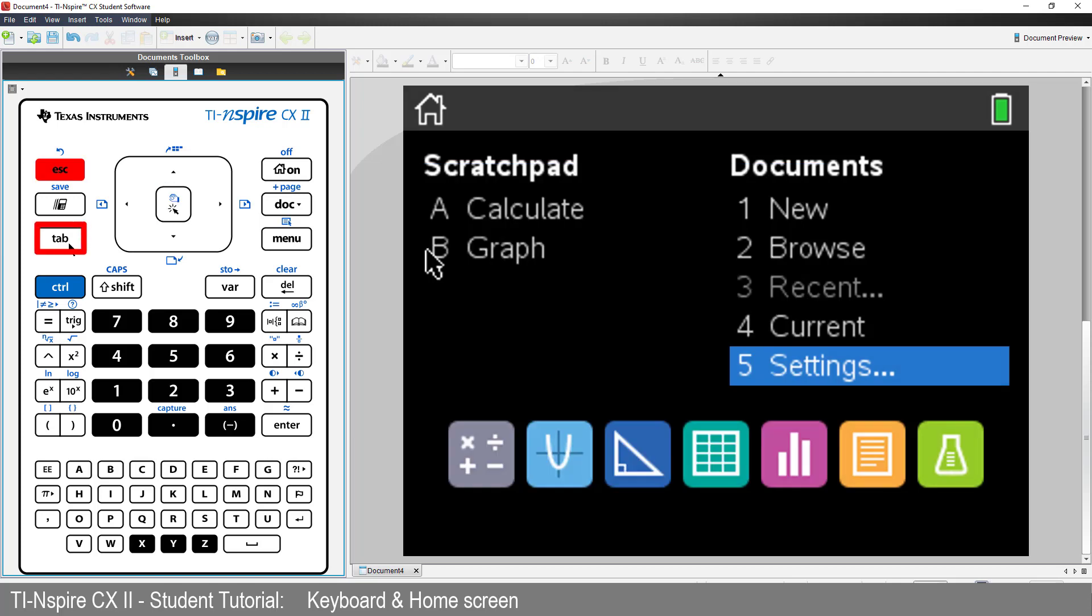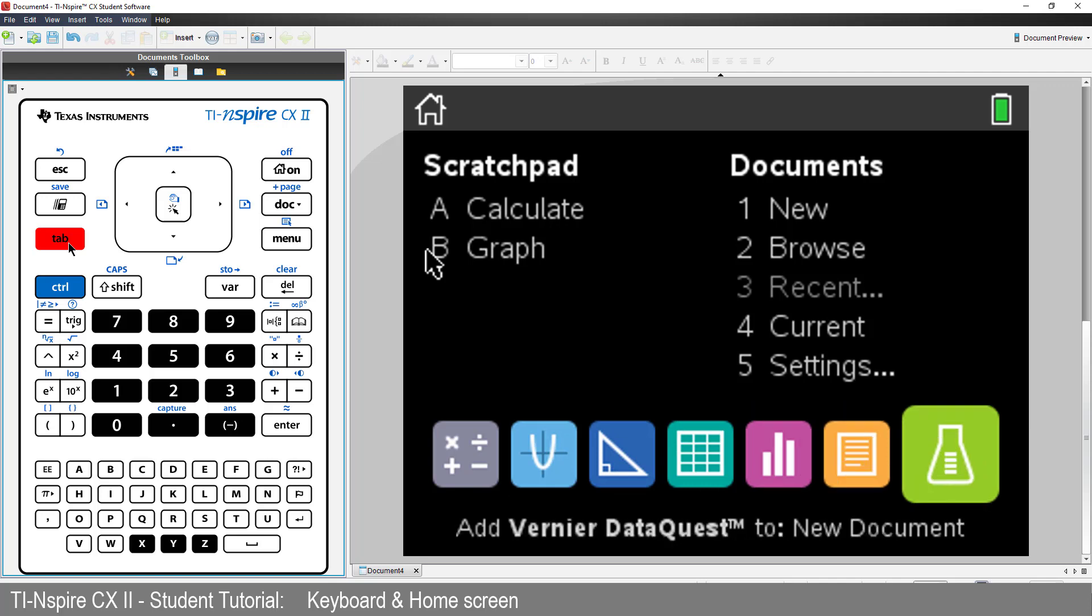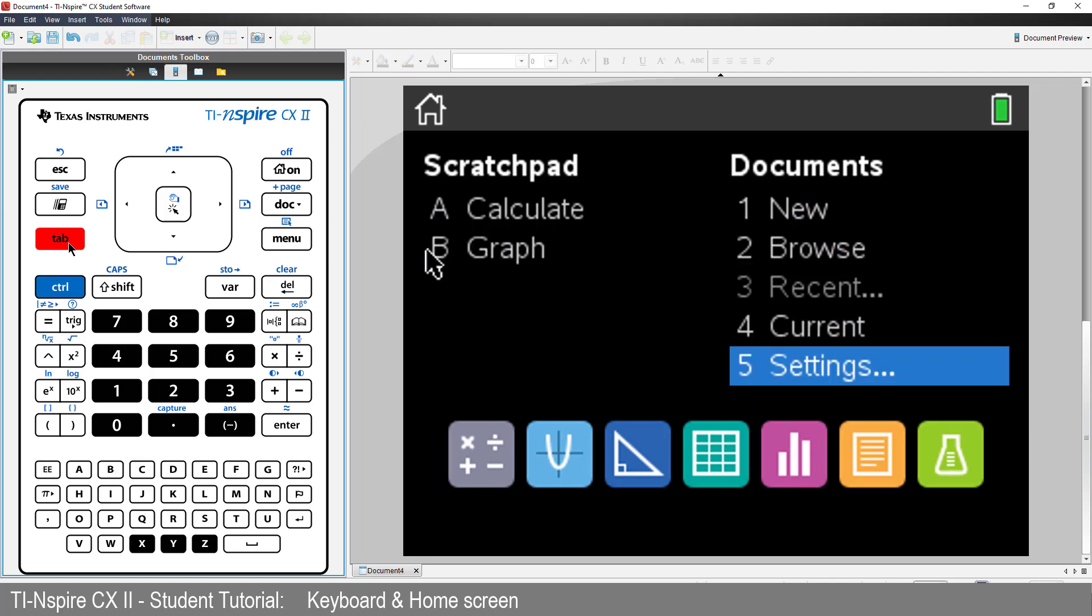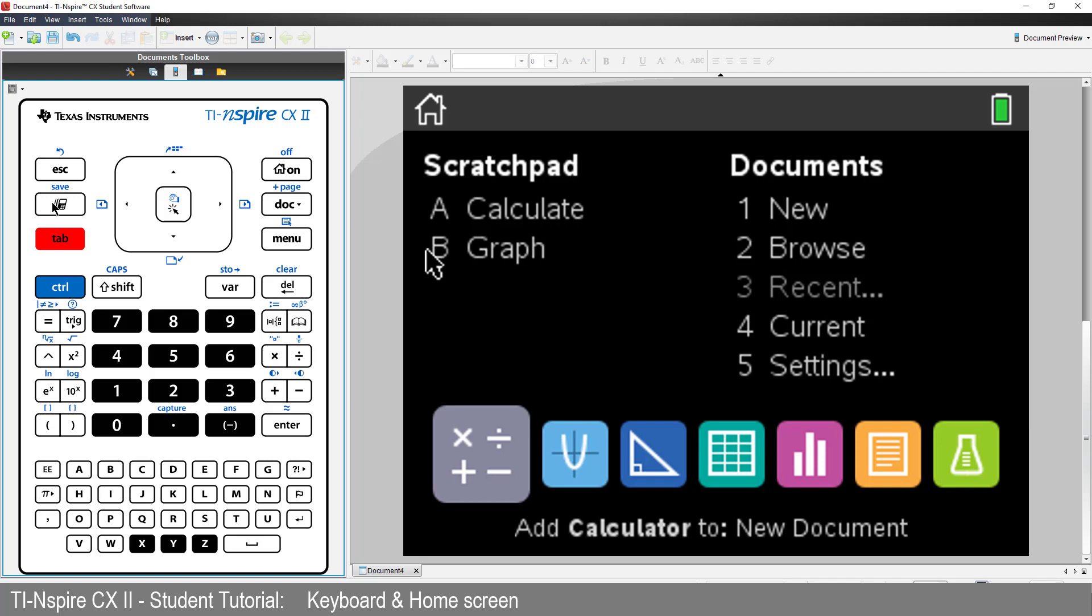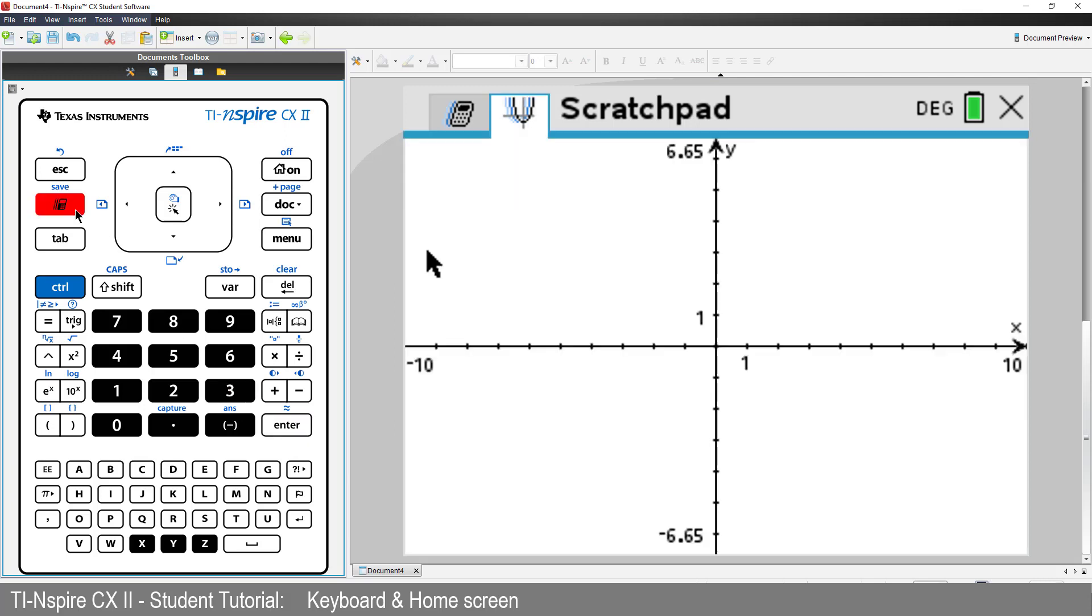You'll also notice the tab key. Its location and function is similar to that on a computer. The tab key can be used to navigate menus and environments quickly and easily. In between the escape and tab keys is scratchpad. If at any time you just want to do a quick calculation or graph, just press the scratchpad key.